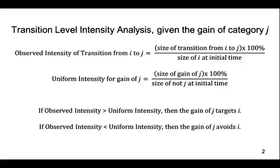If the observed transition intensity is greater than the uniform intensity, then we say that the gaining category targets the losing category. If the observed transition intensity is less than the uniform intensity, then we say that the gaining category avoids the losing category.